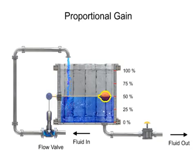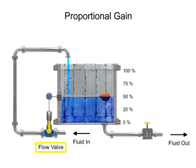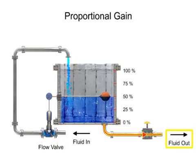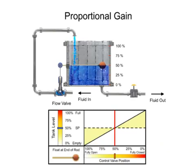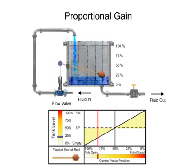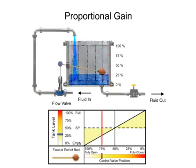The float mechanism is designed so that when the tank level is half-full, the flow valve is open to the position that causes the amount of fluid entering the tank to be equal to the amount leaving the tank. The float on the end of the rod is positioned to meet the minimum and maximum flow capability of the valve. The valve is actuated by the float to a fully open position when the tank level is low, and fully closed when the tank level is full.